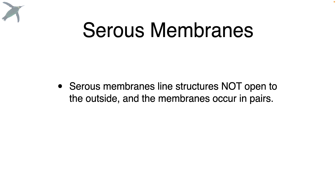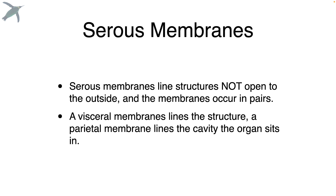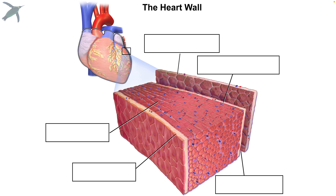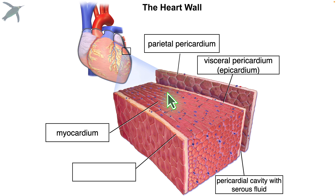Next we have coverings and walls of the heart. The heart is covered by serous membranes — membranes that line all structures that don't open to the outside — and they occur in pairs. There's a visceral membrane that lines the structure and a parietal membrane that lines the cavity the organ sits in. On the outside we have the parietal pericardium — 'peri' means around, 'parietal' means wall, so this is the wall around the heart. The inner layer is the visceral pericardium, sometimes called the epicardium. In between the two is a pericardial cavity filled with serous fluid, which prevents friction as the heart beats. Most of the heart wall is the myocardium — the heart muscle itself. The innermost layer is the endocardium, a layer of simple squamous epithelia providing a very smooth surface for blood passing over it, and it is continuous with the blood vessels.